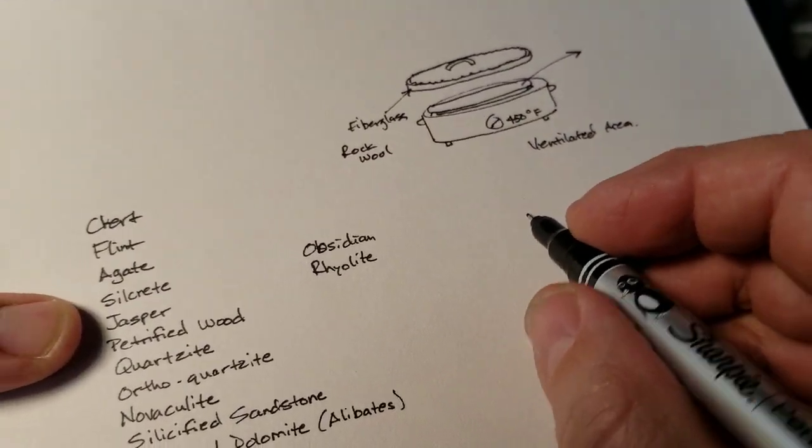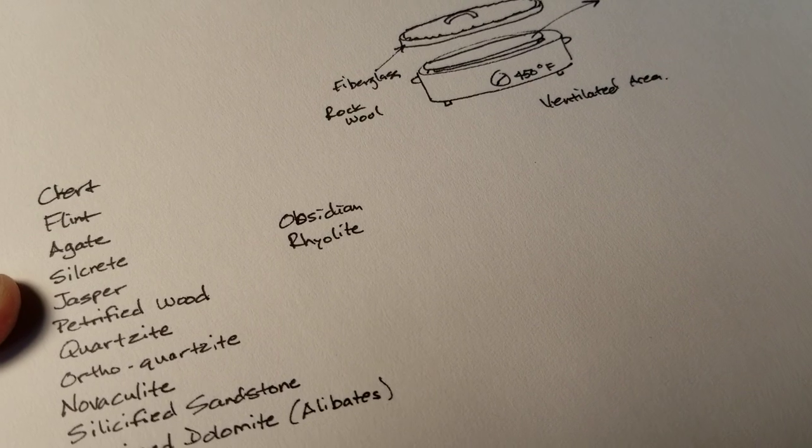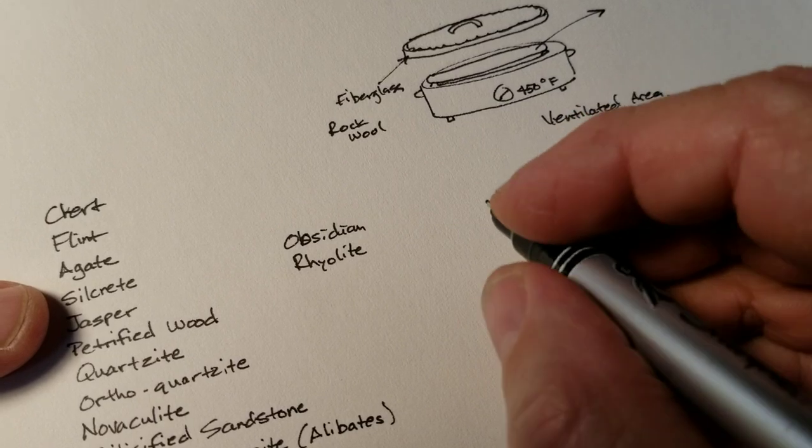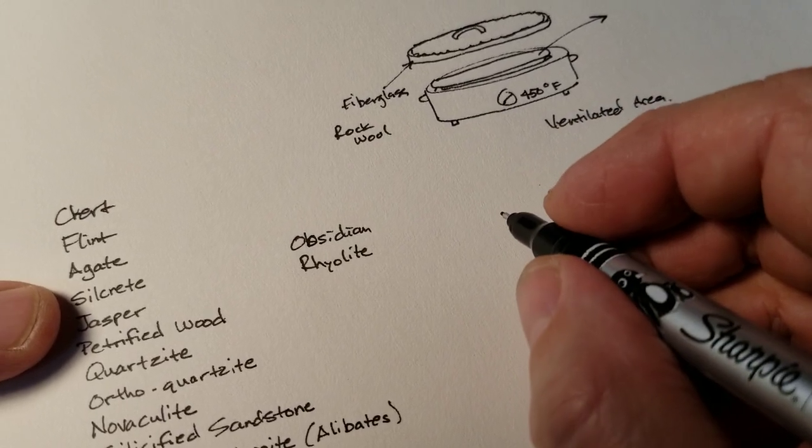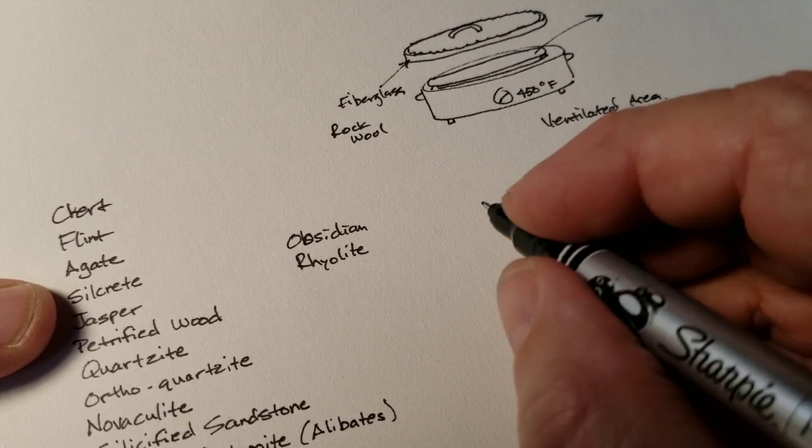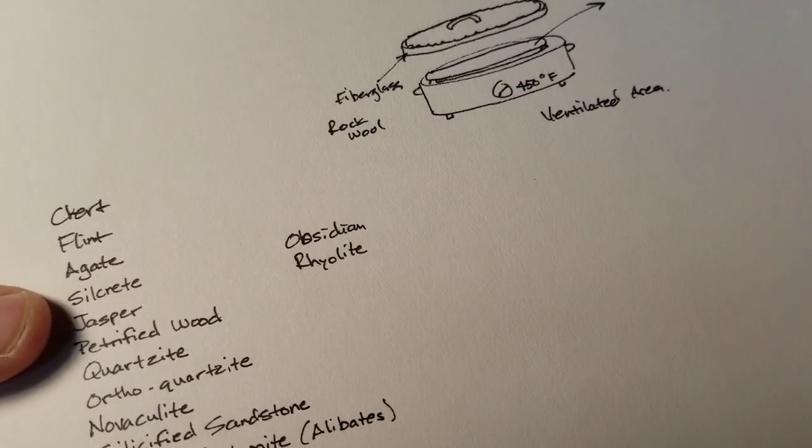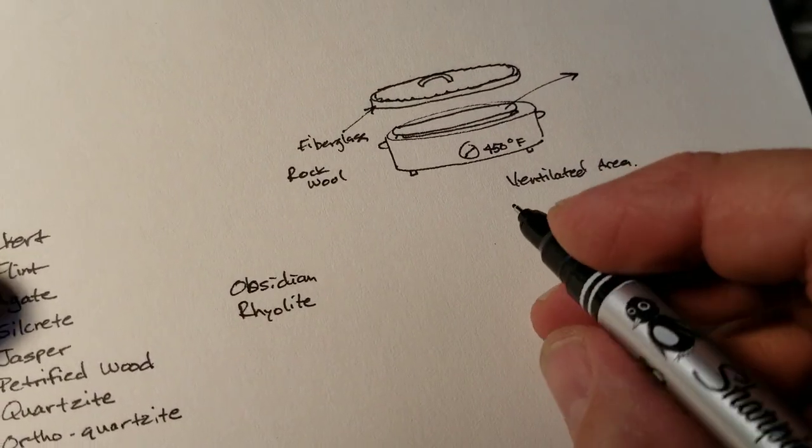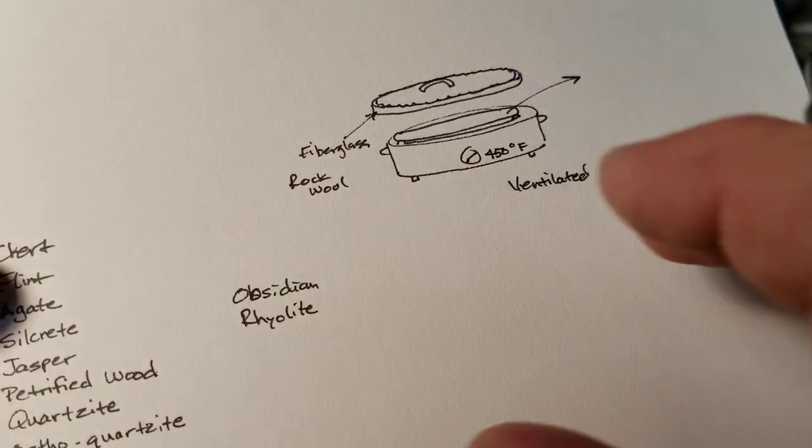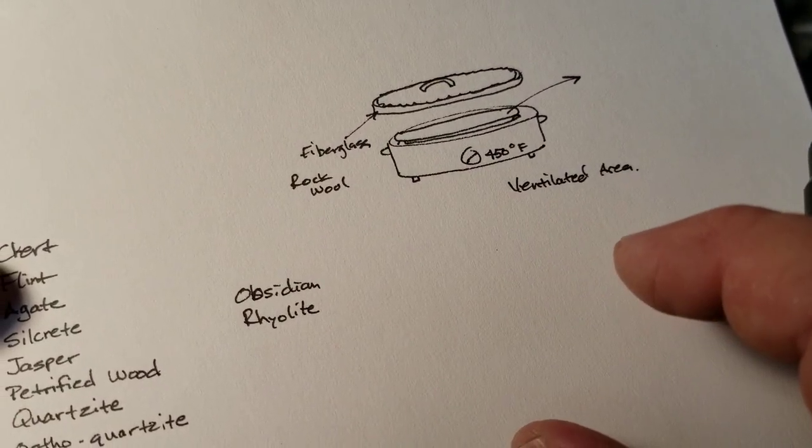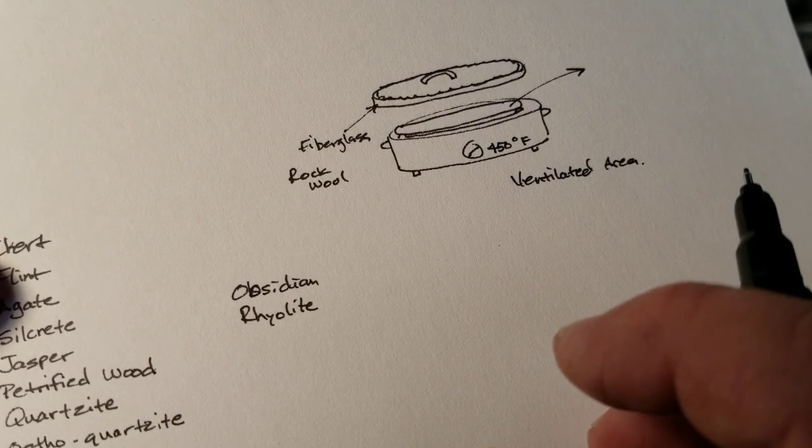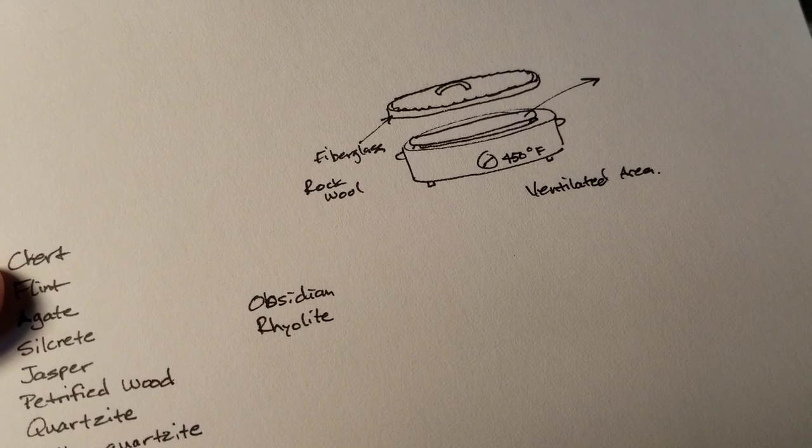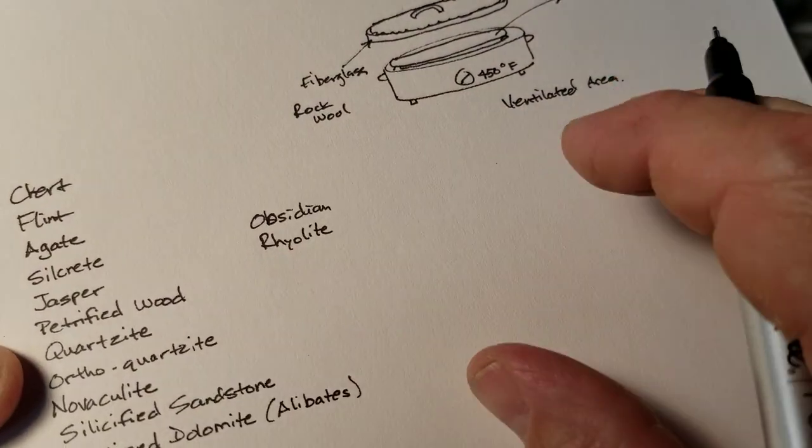Now, there are charts online. You can look up heat treating online, just Google heat treating rocks or heat treating flint or heat treating jasper or any other type of material like that. And you'll usually get links to websites like Puget Sound Nappers, I think has one where there's charts of heat treating ranges for different materials.